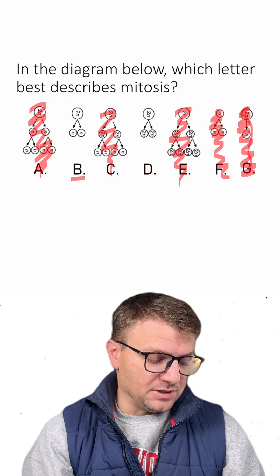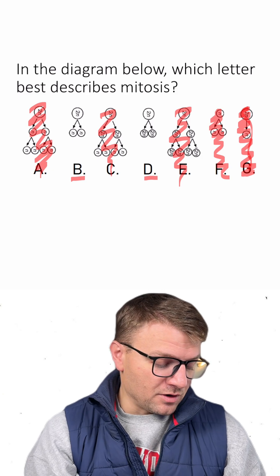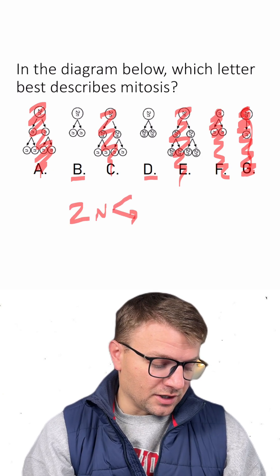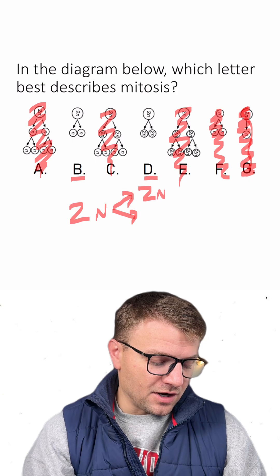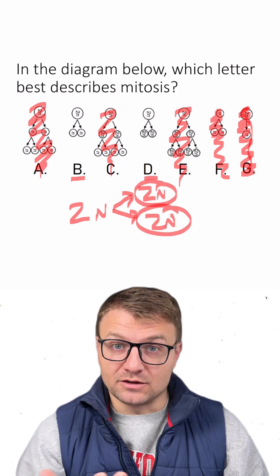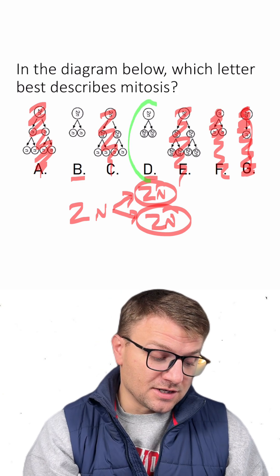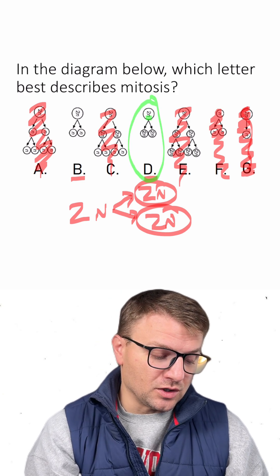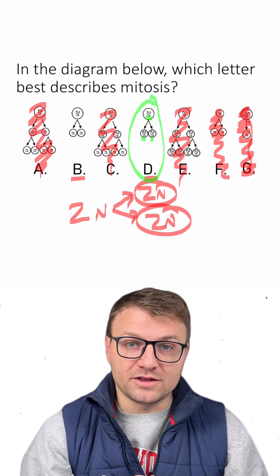So we're left between B and D. Remember that diploid cells are going to split during mitosis. However, they're going to remain diploid after the cell divides. So if we look between our answers, D is the right choice because we start and end with diploid cells.